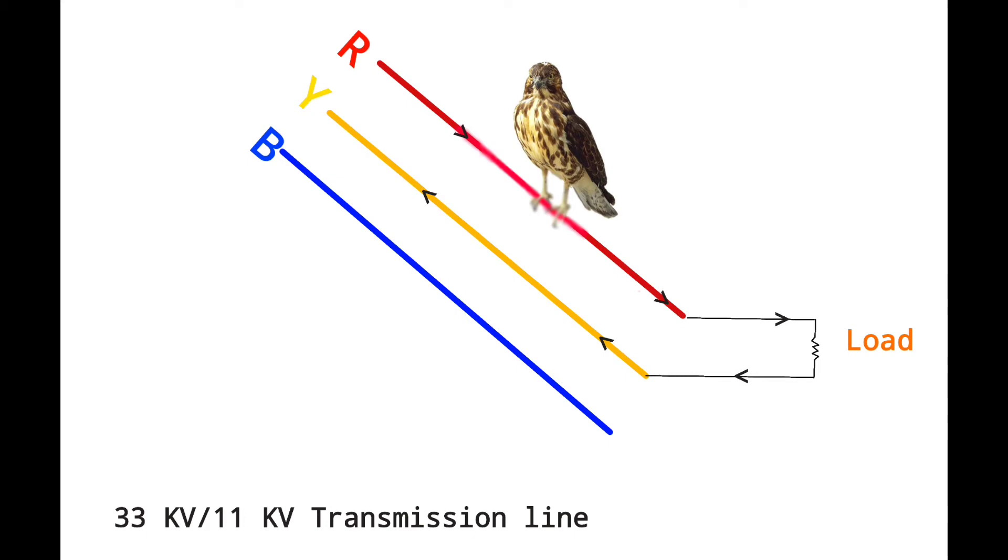But sitting on a wire, the bird is not getting electrocuted because the bird is not touching another phase to complete the circuit, and current is not flowing through his body. Look at the legs of the bird, there is a gap between two legs. He could get shock if the resistance of the wire would be very high. Here resistance of the wire is zero, that's why all the current is flowing through it, not through the bird.